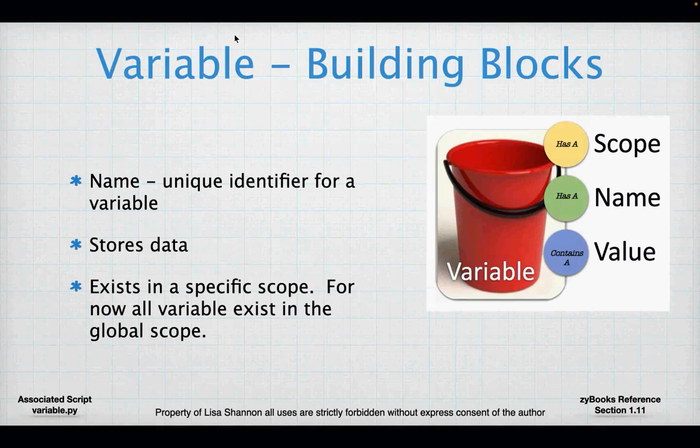Let's talk about the building blocks of a program. The first building block is something called a variable. A variable can be seen as a bucket — you have something you want to put in the bucket. Maybe you have tennis balls; it's a lot easier to carry ten tennis balls around in a bucket than in your arms. We can name our bucket. So a variable is some place to store stuff — I'm going to call that stuff data because it can be lots of different things. I can name my bucket, so every variable has a name.